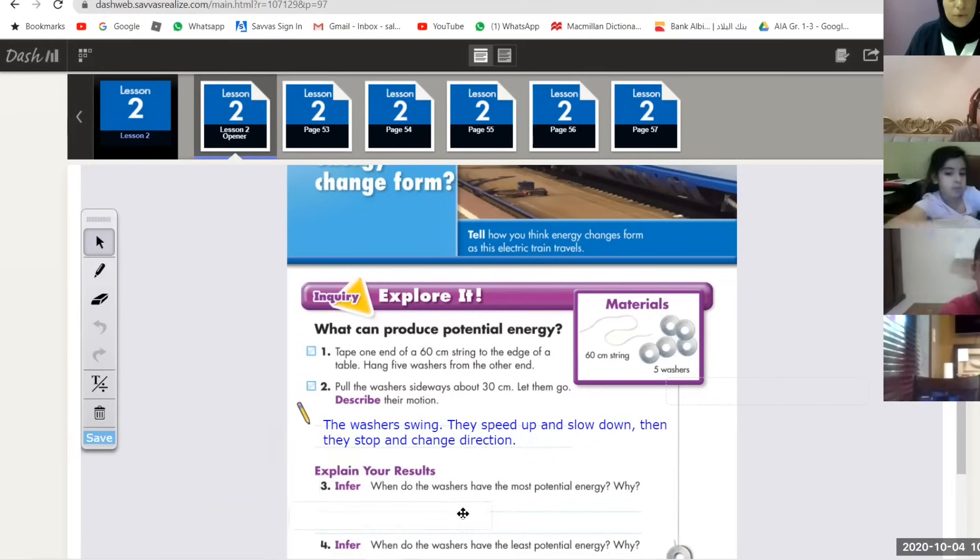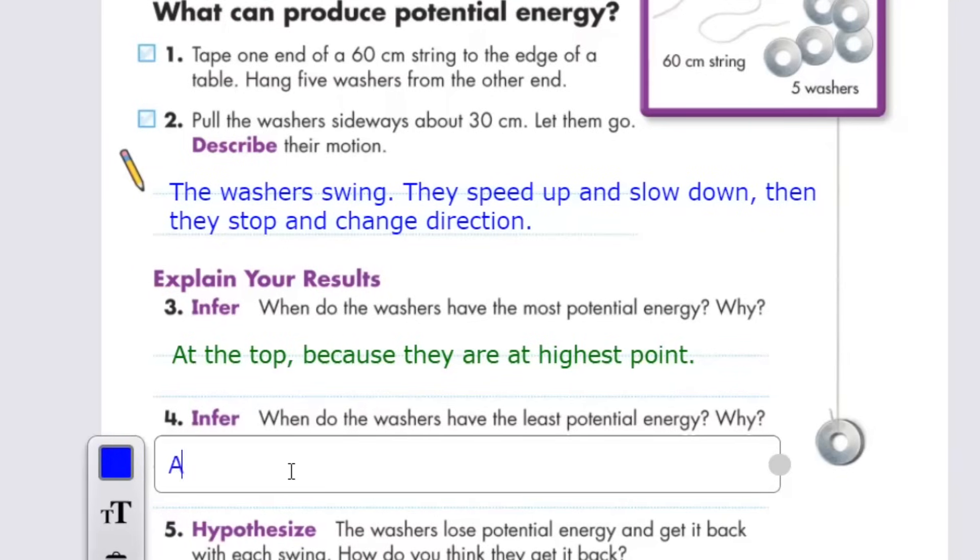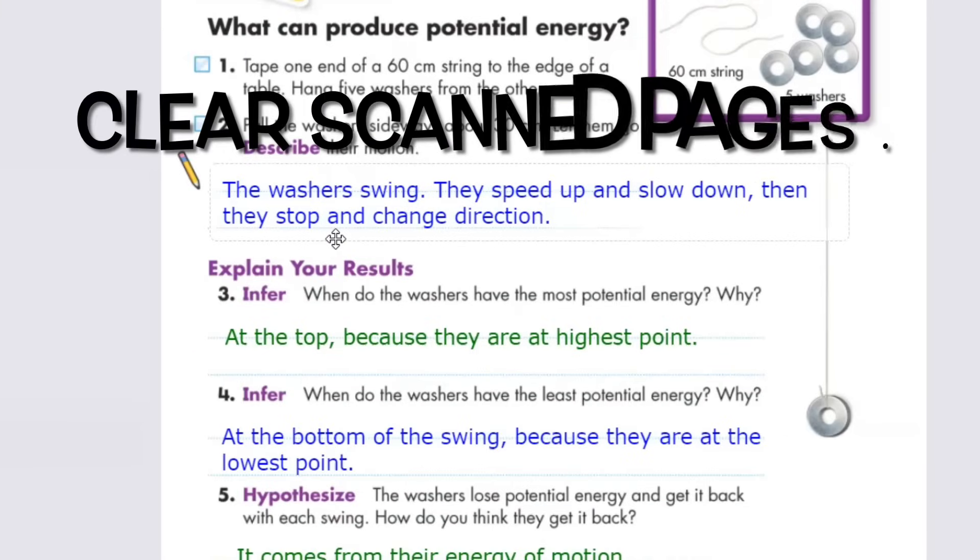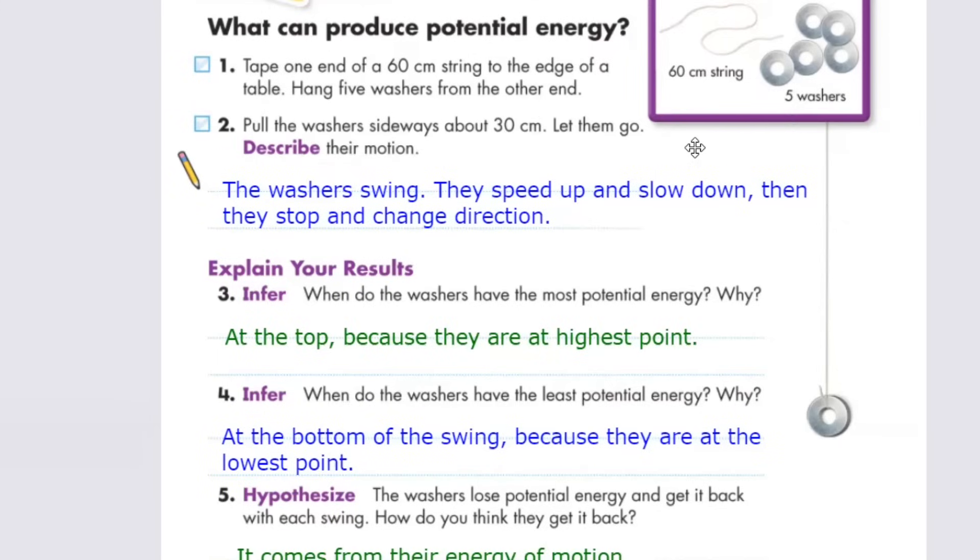Okay, number three. At the top, the least potential energy. Now go to page 53 if you finish. Aliyah, did you finish writing the answers? Go to page 53 and write the date, which is 4-10-2020.